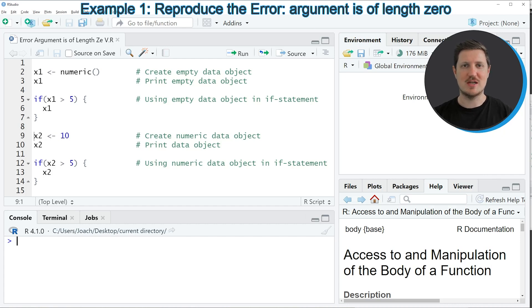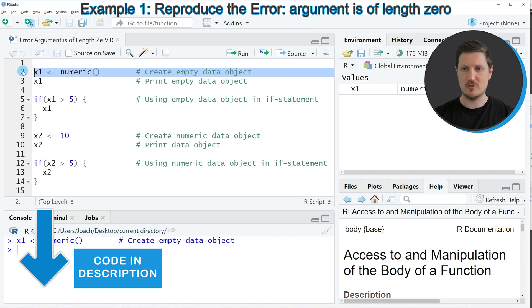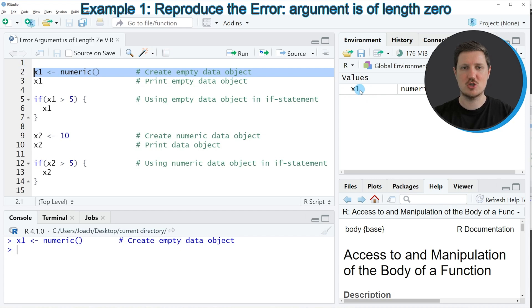In order to reproduce this error message, we first need to create a data object, as you can see in line 2 of the code. So if you run this line of code, you can see at the top right of RStudio that a new data object is appearing, which is called X1.